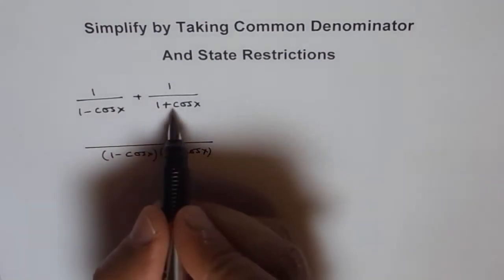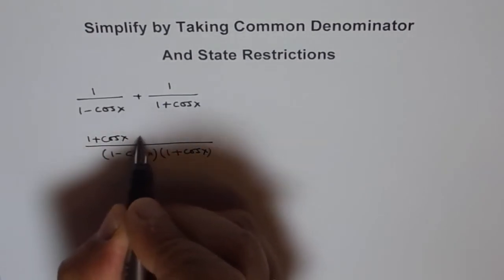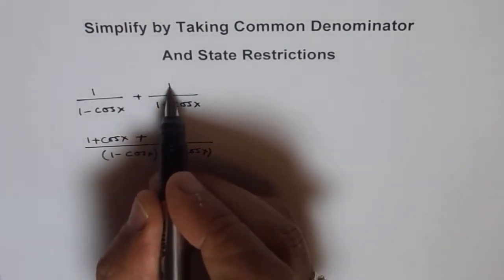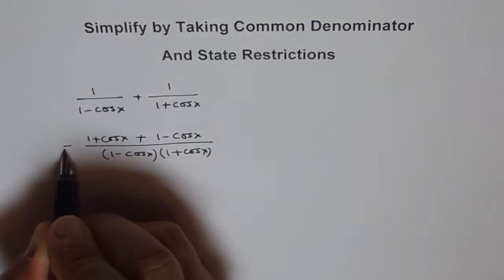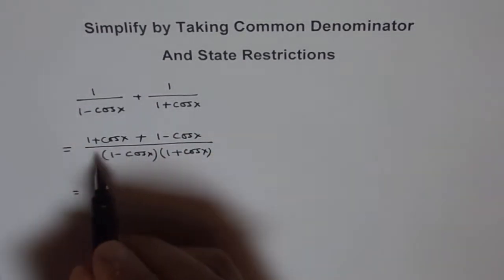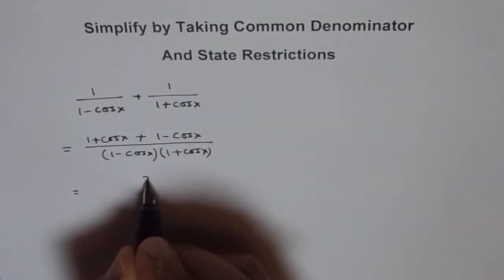Now this factor gets multiplied by 1 plus cos x. We have 1 plus cos x here. And this factor goes there, 1 minus cos x. Then you know 1 plus 1 is 2 and cos x minus cos x is 0. So we get 2 over 1.